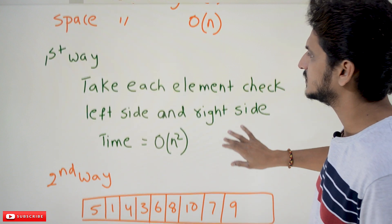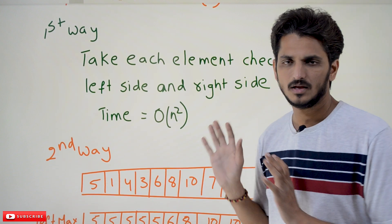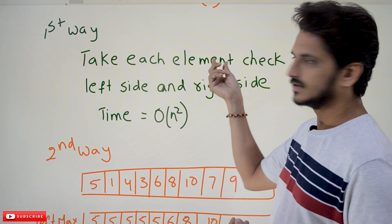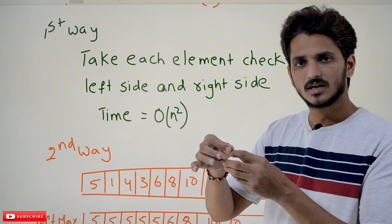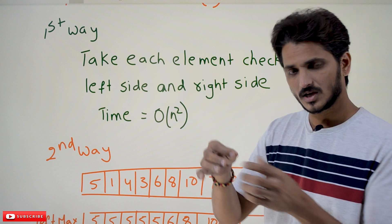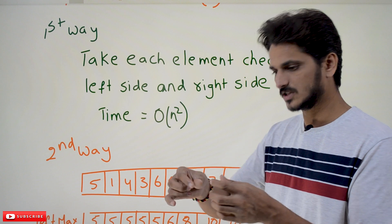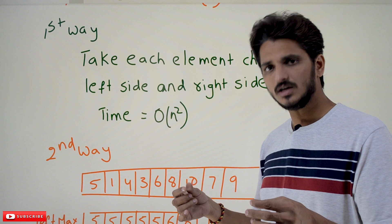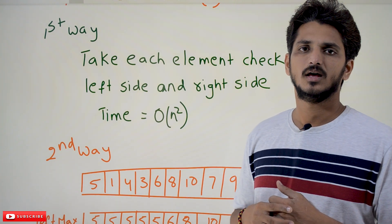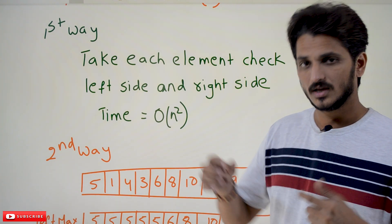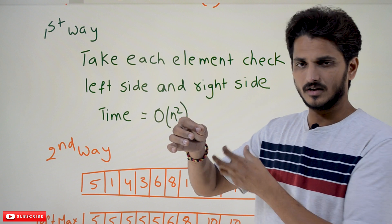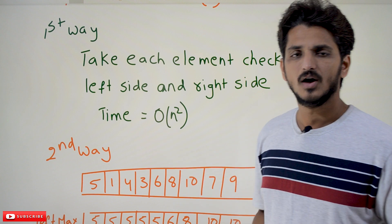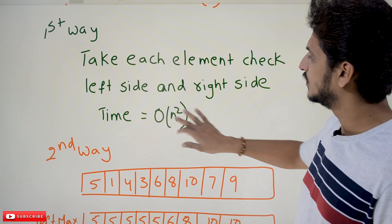Coming to the solution part, the first way is to take each element. Writing the code is very simple. If you take each element — take the second element, check if the left hand side is smaller or not and the right hand side is greater or not. Take the third element, check left hand side and right hand side. If you do this logic for every element, we need a time complexity of O(n²).